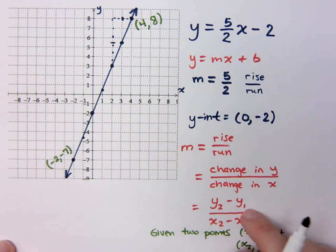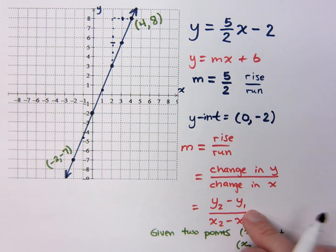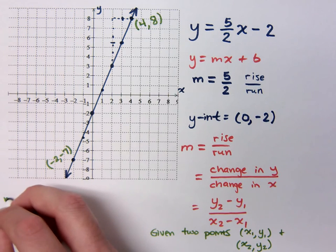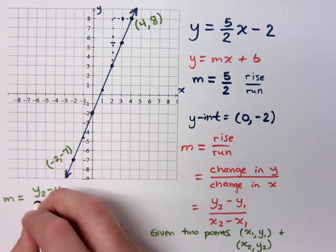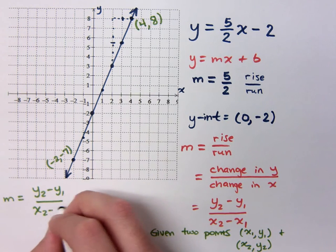Now according to this formula, I should just be able to plug in these coordinates and get my slope. So if my slope, let's write the formula: y2 minus y1 over x2 minus x1.